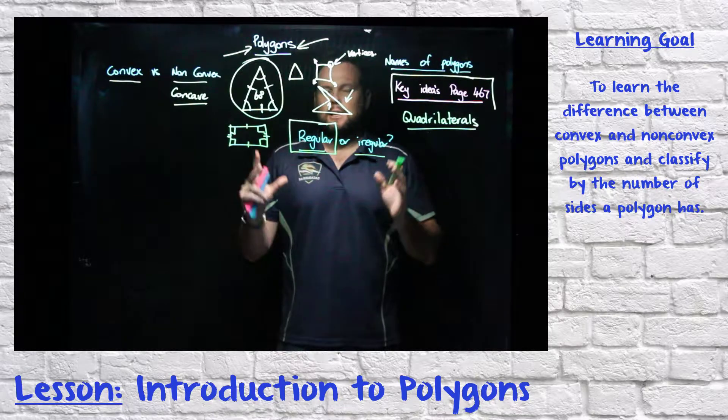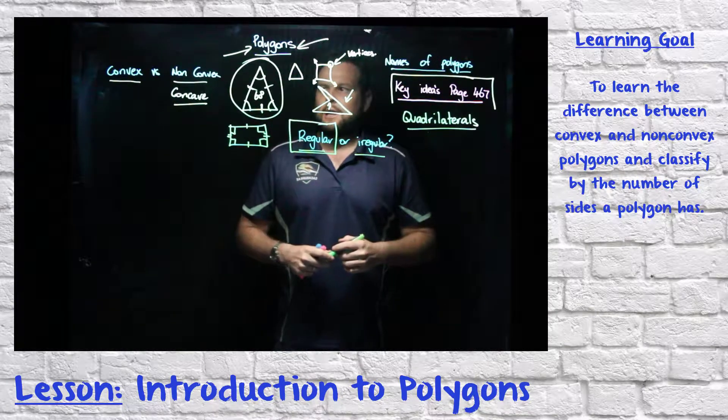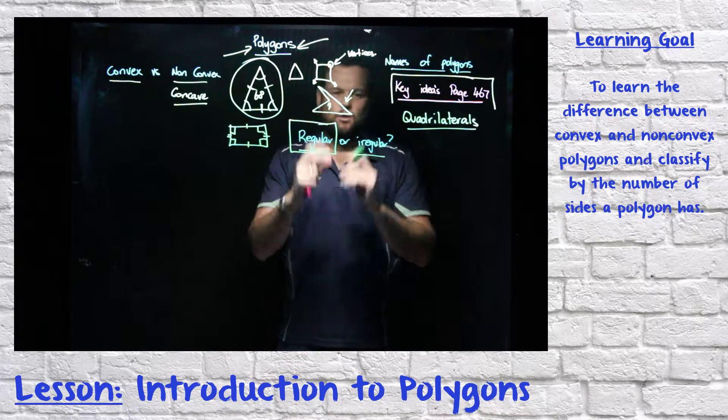That's basically all you need to know for polygons at the moment. Refer to those key ideas and remember the convex, non-convex and regular or irregular.